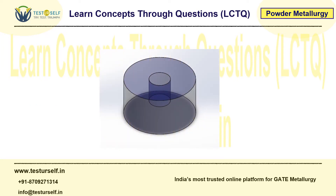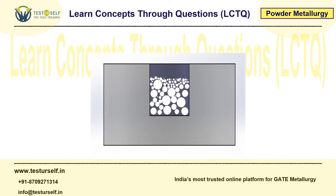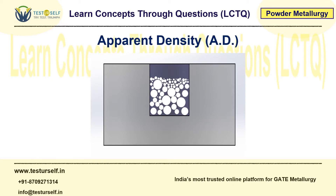Let's take a die. This is the die and this is the die cavity — a cylindrical die cavity. We are going to add a fixed amount of powder in this die cavity without tapping, vibrating, or compacting it. We just add powder and then measure its mass and volume. From this, we get some density, known as the apparent density. The formula is: rho equals mass upon volume.